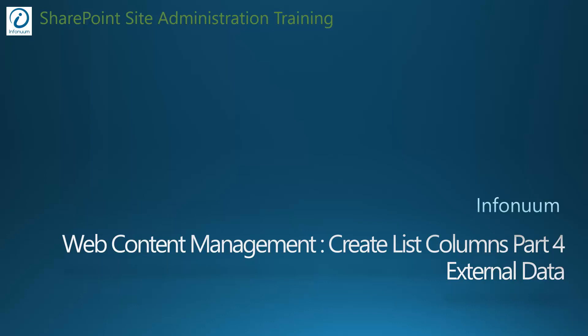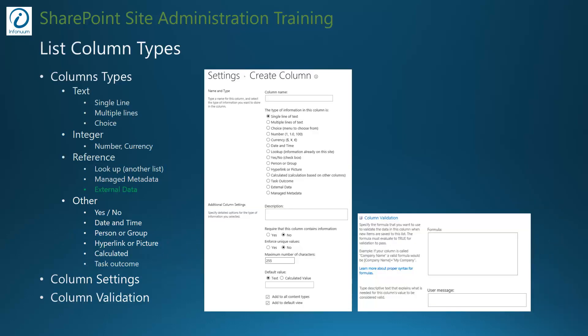In part 4 of adding list columns, let's take a look at another advanced column type called external data. While managed metadata list column is useful for adding hierarchical metadata to list items or documents, external data list column type allows you to consume metadata from external systems within your SharePoint list or libraries. External data in SharePoint is exposed using a SharePoint feature called external content type — a mechanism for classification of content created or consumed within SharePoint. I will cover this feature in detail later in the video series.